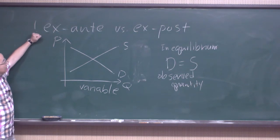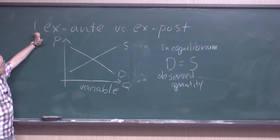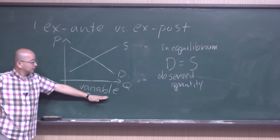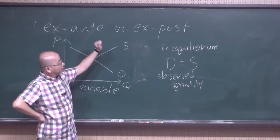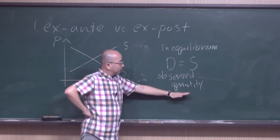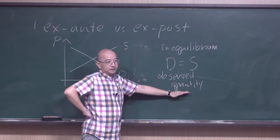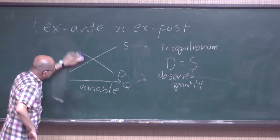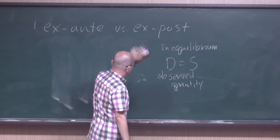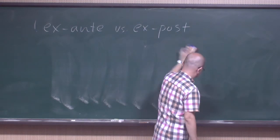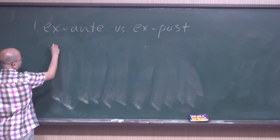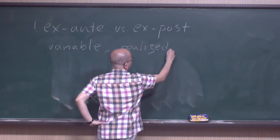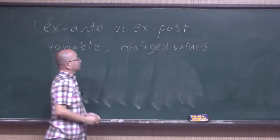More generally, what you need to know is that when we take the ex-ante perspective, we call them variables — they can possibly take different values. When we take the ex-post perspective, we fix the value because we actually observe the realized values.